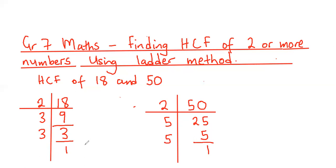So 18 as a product of its prime factors equals 2 × 3 × 3. And 50 as a product of its prime factors equals 2 × 5 × 5.